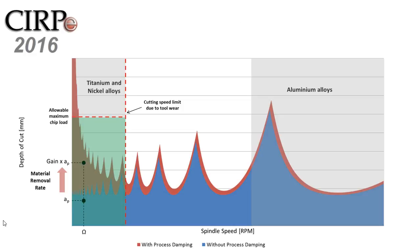One of the major limitations on the productivity of the milling process is regenerative chatter. We always need to avoid it, as otherwise our part would be simply scrapped. The chart you see now on the screen is called the Stability Lobe Diagram, which basically allows you to find chatter-free depth and spindle speed combinations considering the machine tool system dynamics.